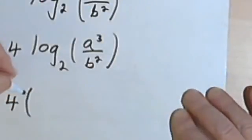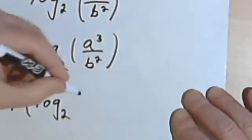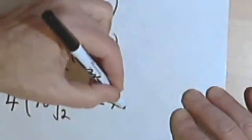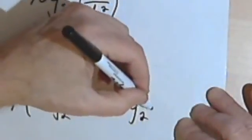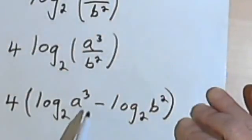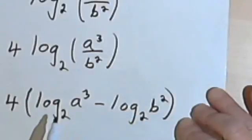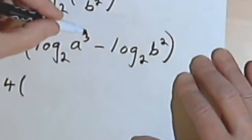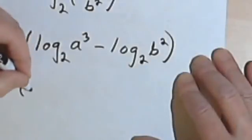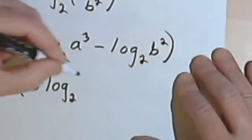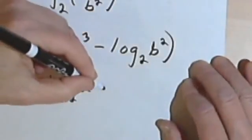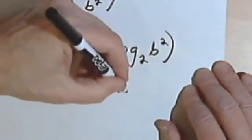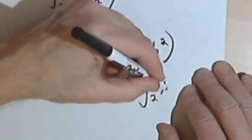I'll put parentheses here: 4 times the quantity log base 2 of a to the third, minus log base 2 of b squared. Now I want to take the exponents on each argument and make them into coefficients. So I'll have 4 times the quantity 3 log base 2 of a, minus 2 times the log base 2 of b.